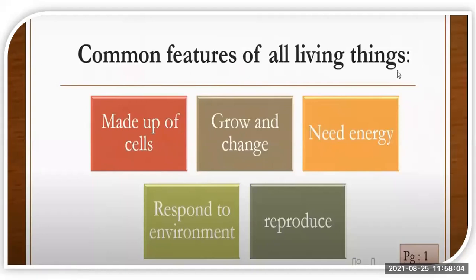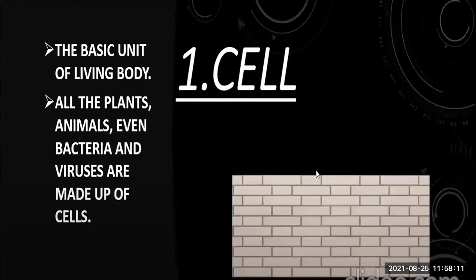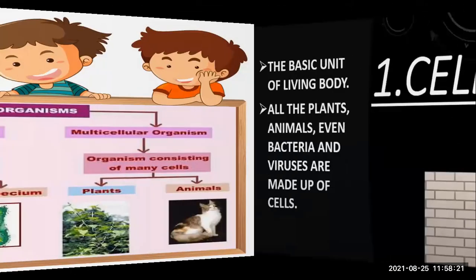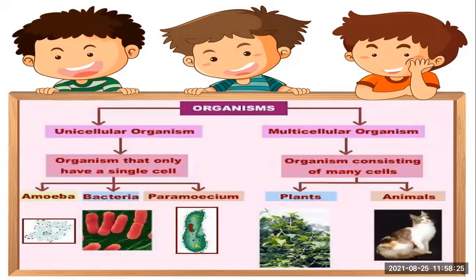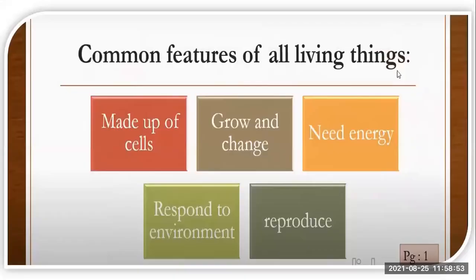Let's start with revision. Cells are the basic unit of a living body, and every plant, every human being, every animal has cells. A living body cannot be made without cells. According to the number of cells, we have divided living organisms into two categories: unicellular organisms and multicellular organisms. Unicellular organisms have only one cell, while multicellular organisms have many — billions of cells in their body.